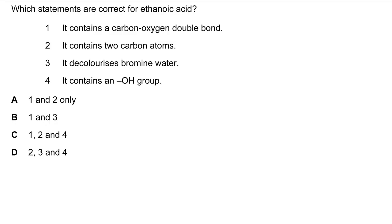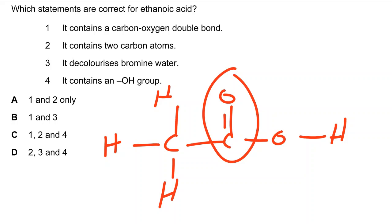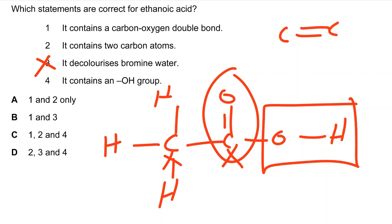Next question: which statements are correct for ethanoic acid? Drawing the displayed formula — it contains a carbon-oxygen double bond: yes. It contains two carbon atoms: yes. It decolorizes bromine water: no, bromine water only reacts with carbon-carbon double bonds, not C=O, so this is incorrect. It contains an OH group: yes. So statements one, two, and four are correct — answer C.